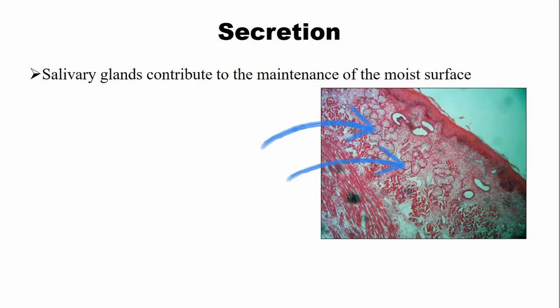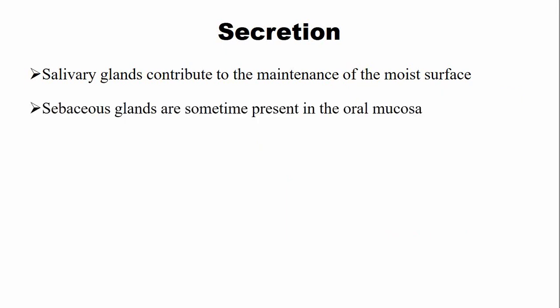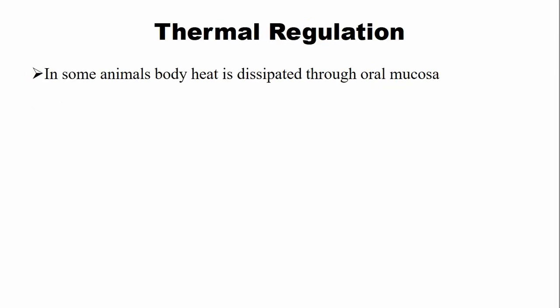The secretions of salivary glands contribute to the maintenance of the moist surface of the oral mucosa or the mucous membrane. Beside salivary glands, there are sometimes sebaceous glands as well, and these sebaceous glands are present in very small quantities. In some animals, body heat is released through the oral mucosa by a process such as panting, for example in dogs.